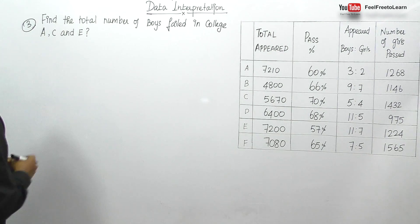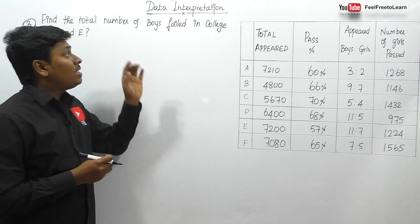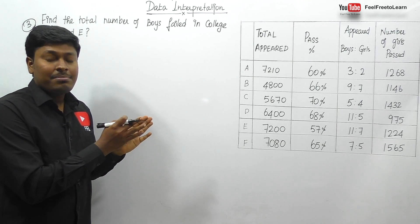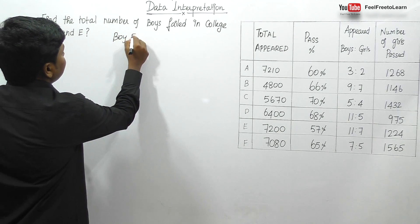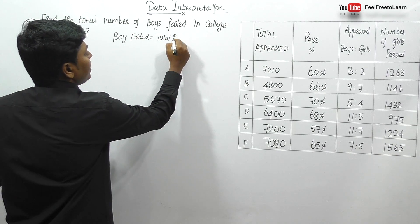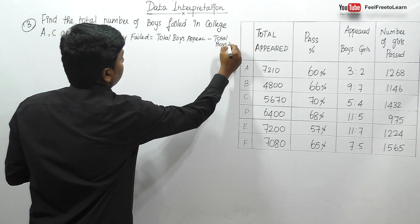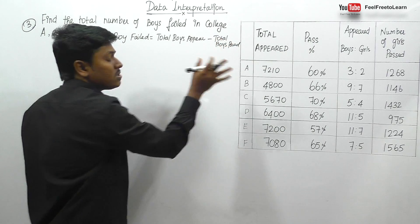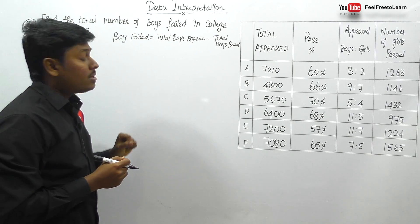Question number three: find the total number of boys failed in college A, college C, and college E. Our target is to find the total boys failed in three colleges. The methodology is: total boys appeared minus total boys passed equals total boys failed. We need to be a little bit faster while solving this type of question.